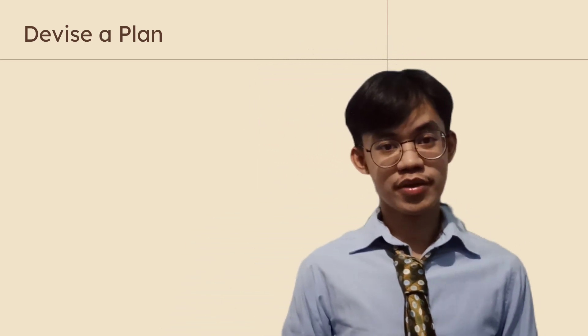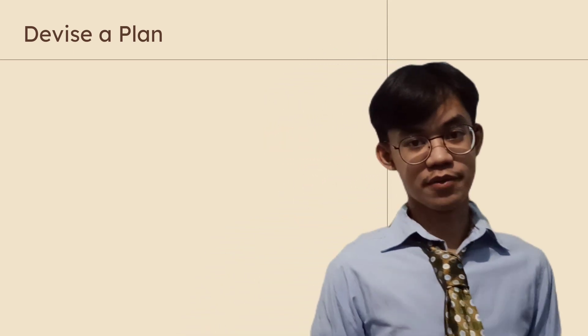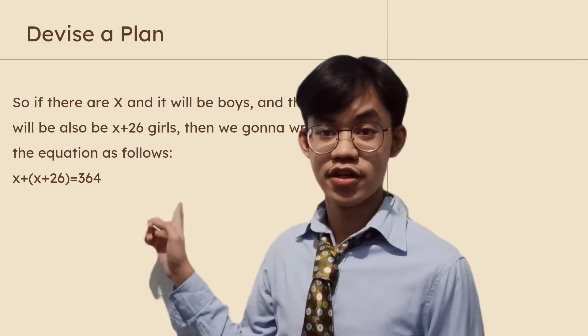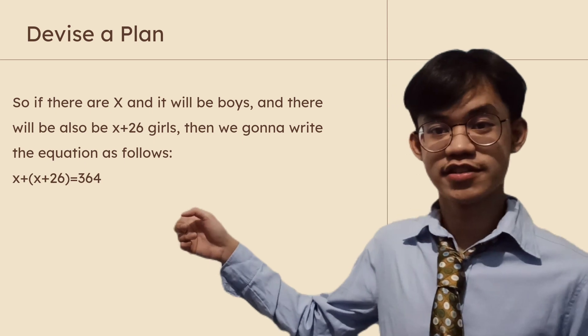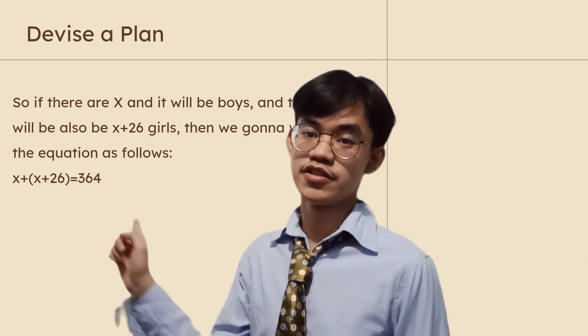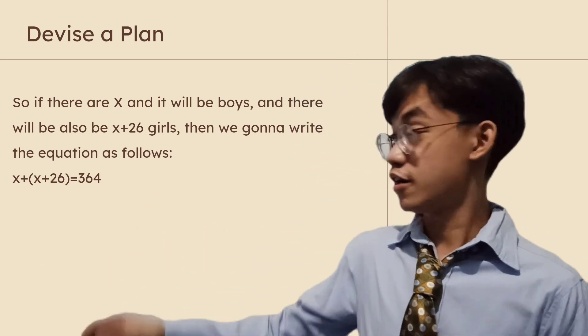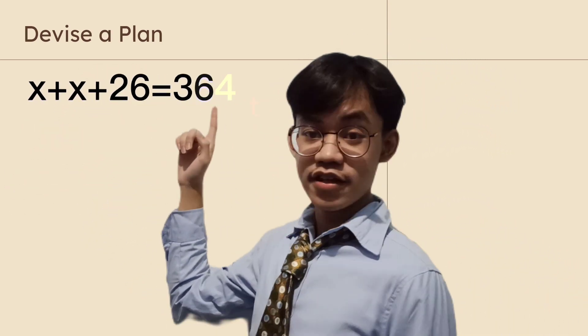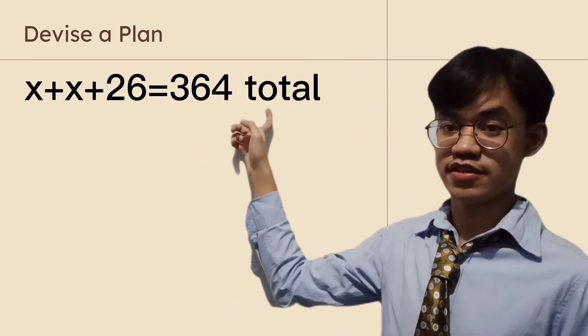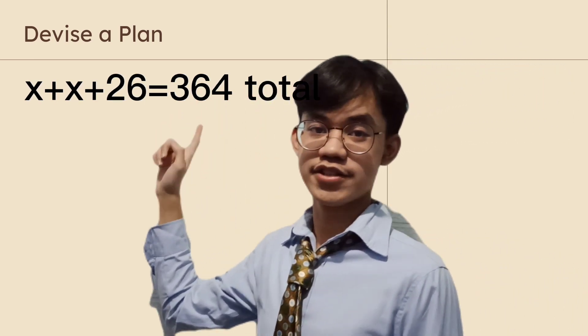After understanding the problem, you need to devise a plan. You need to make a list or a table for better understanding of the problem. So if there are x, then it will be boys, and there will be x plus 26, then it will be girls. We're going to write the equation as follows: x plus x plus 26 equals a total of 364.